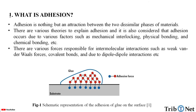What is adhesion? Adhesion is nothing but an attraction between the two dissimilar phases of materials. There are various theories to explain adhesion, and it is also considered that adhesion occurs due to various factors such as mechanical interlocking, physical bonding, and chemical bonding. There are various forces responsible for intermolecular interaction such as weak Van der Waals force, covalent bonds, and dipole-dipole interaction.